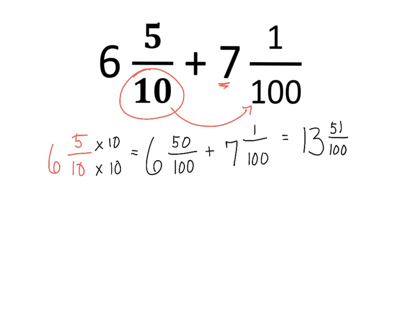And 51 hundredths. Now this is a mixed number and we've got to convert this into a decimal. So we have 13 and 51 hundredths.